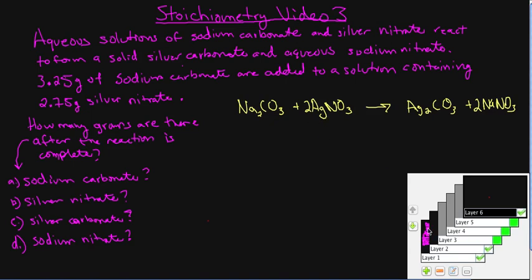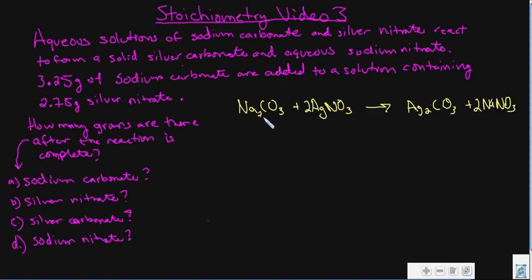First we have to write out and balance the equation. Sodium carbonate involves an ionic bond, so we figure out the charge of each ion: carbonate is negative two, sodium is positive one, so we need two sodiums to match up — giving us Na₂CO₃. Plus silver nitrate.